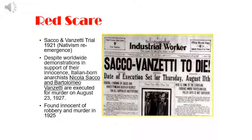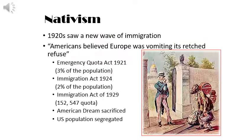In the Sacco and Vanzetti trial of 1921, referenced in Unit 3 Lesson 1 vocabulary, there began a re-emergence of nativism, where Italian immigrants were put to death after their trial despite very little evidence of their guilt. Nativism in the 1920s grew with a new wave of immigrants coming to the United States; Americans by and large believed Europe was 'vomiting its wretched refuse.'